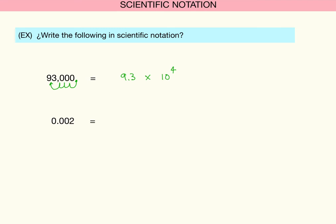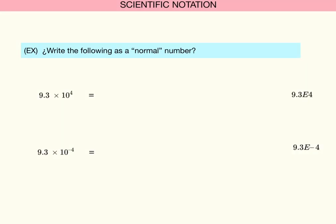Let's look at one where we move the decimal point the other way. Take the number 0.002 and convert it to scientific notation. In this case we move the decimal three places to the right to get 2. When you move a decimal place to the right, the exponent must be negative, so this number becomes 2 times 10 to the minus third.